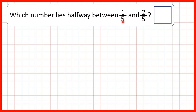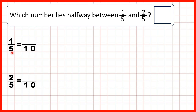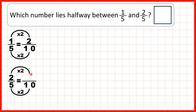The next multiple of five is ten, so we can change one-fifth and two-fifths into tenths. Five times two is ten, one times two is two, five times two is ten, two times two is four. So now we know that one-fifth is the same as two-tenths and two-fifths is the same as four-tenths, so the number halfway between them must be three-tenths.